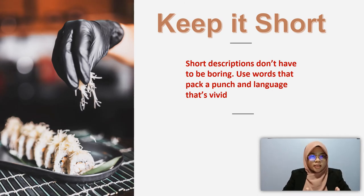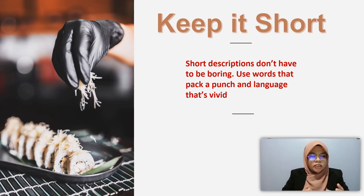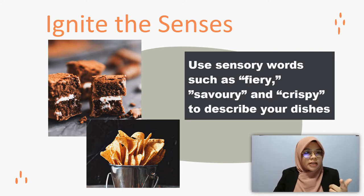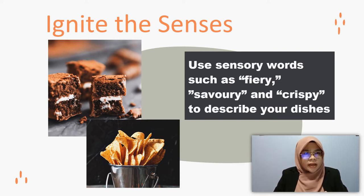Number two: just keep it short. You could write about each item on your menu, but descriptions should be consistent. Short descriptions don't have to be boring — use words that pack a punch and language that is vivid and enticing, giving just enough information to attract customer attention. We can also ignite the senses by using sensory words such as 'fiery,' 'savory,' and 'crispy' to describe dishes. People are driven by the senses, and by using simple yet tantalizing terms that speak to each of the five senses, you paint a clear picture of what diners can expect from the dish.